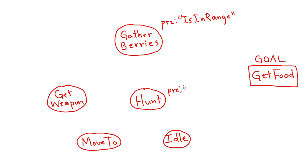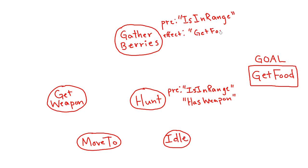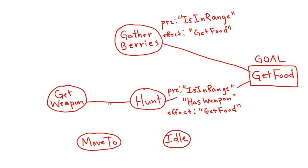First we need to assign some preconditions or requirements to these actions. For example, gather berries can be done so long as a berry bush object is in range, but hunt requires the AI to have a weapon and be in range of an animal. So the precondition of gather berries is 'is in range,' and hunt is 'is in range AND has weapon.' We'll also define the effect of both, which is 'get food' — whether it's berries or meat — but one requires an extra step. So to balance that, let's say hunting gives you more food.